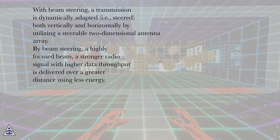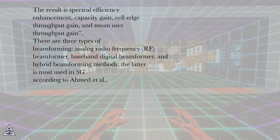Beamforming is typically accompanied with beam steering/beam tracking. With beam steering, a transmission is dynamically adapted, i.e., steered, both vertically and horizontally by utilizing a steerable two-dimensional antenna array. By beam steering, a highly focused beam, a stronger radio signal with higher data throughput is delivered over a greater distance using less energy. The result is spectral efficiency enhancement, capacity gain, cell edge throughput gain, and mean user throughput gain.